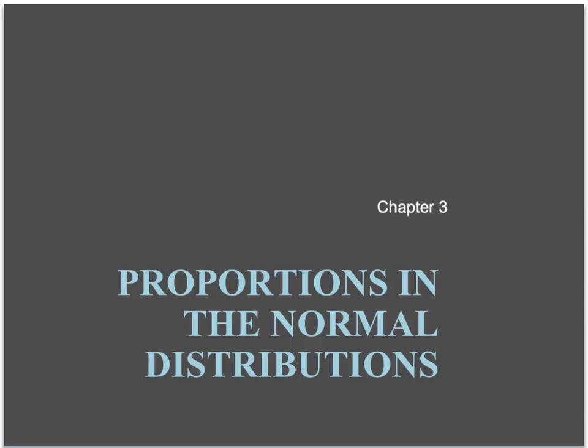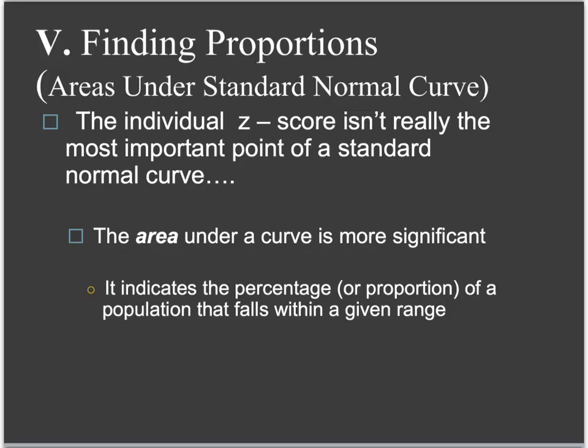In this video, we're going to talk about finding proportions in the normal distributions. Proportions in the normal distributions - we're looking at area under the standard normal curve up to a certain point. It's not really the individual z-score that's so important on a standard normal curve, it's the area under a curve on one side or the other of that.